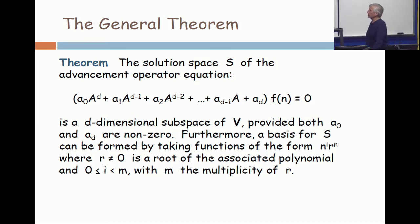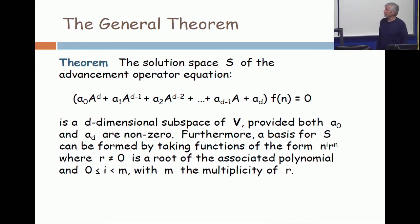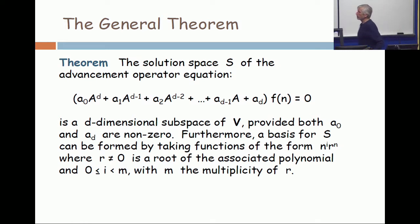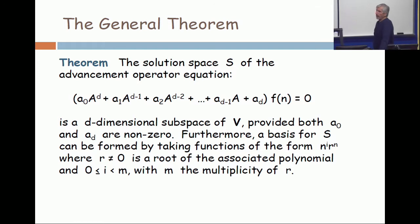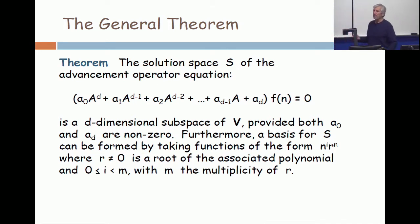When the last coefficient, a sub d, is not zero, then if you substitute zero into the polynomial, all you get is a sub d, and that wouldn't be zero. So the general theorem is that the solution space is a d-dimensional subspace of our infinite-dimensional vector space V. Furthermore, you can find a basis by taking functions of the form: a power of n times the root to the n-th power, where r is a root of the associated polynomial, and the exponent on n is at most m minus 1.